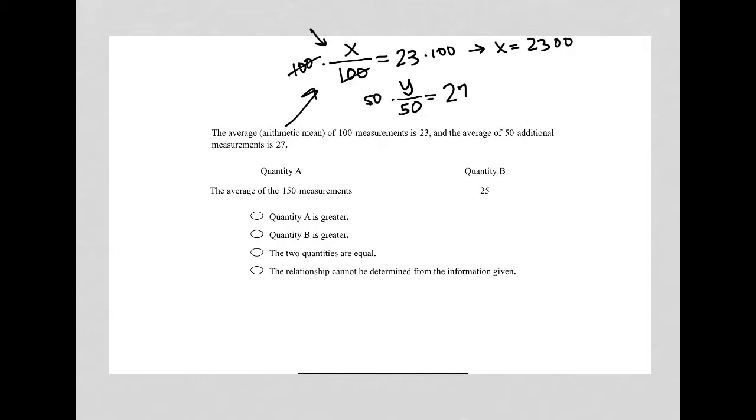So I'm going to figure out what the y value is here. So multiply both sides by 50. And y is equal to 27 times 50. And therefore, I go to my calculator for that. And 27 times 50 is 1,350.